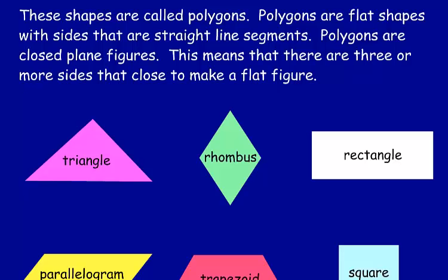Polygons are flat shapes with sides that are straight line segments. They cannot be curved. They are closed figures, which means there are no openings. Polygons are like a fence that you have open would be an open figure, but if you close the gate on the fence, it would be a closed figure.